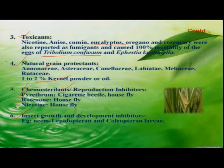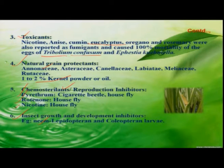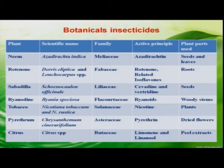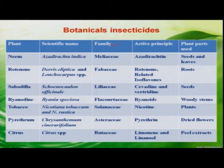Next are insect growth and development inhibitors. Some botanicals act as IGRs — insect growth regulators. Among them is neem, which is going to affect most lepidopteran and coleopteran larvae. This table shows the different plants with their scientific names, the family they belong to, the principal active component present in that plant, and which part of the plant is being used against insect pests.